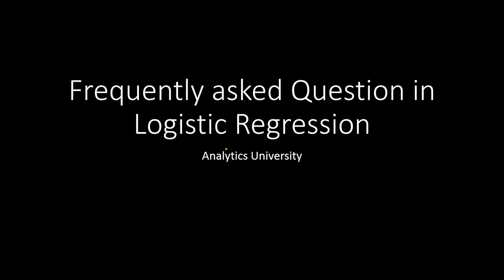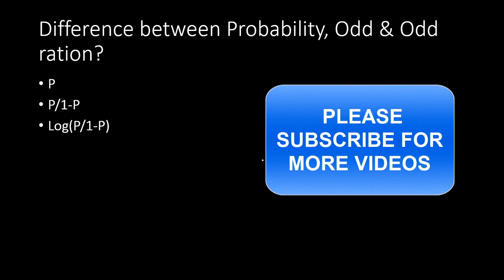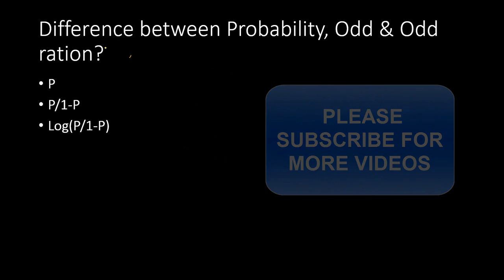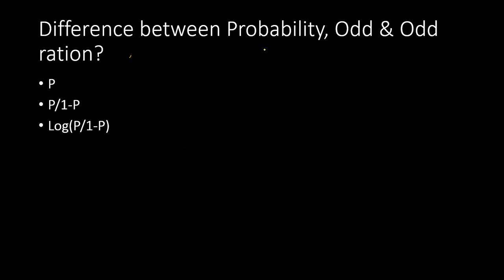In this video, I am going to discuss a couple of more frequently asked questions in logistic regression. One of the questions that is often asked is: what is the basic difference between the three important terms? One is probability, the odd, and the odd ratio.